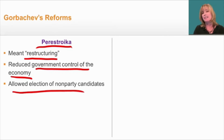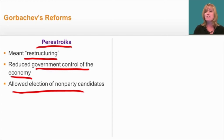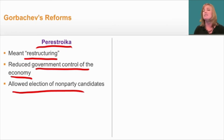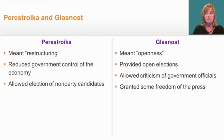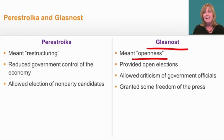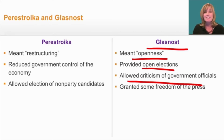During this time, the Soviet Union was a single-party state where all government officials were members of the Soviet Communist Party. Gorbachev started to let other parties' candidates run for political office — very radical reforms. The second program was called Glasnost, meaning openness. It provided for open elections, allowing people to vote for multiple candidates and more people to vote overall. It also allowed people to criticize the government and speak out, granting some freedom of the press.